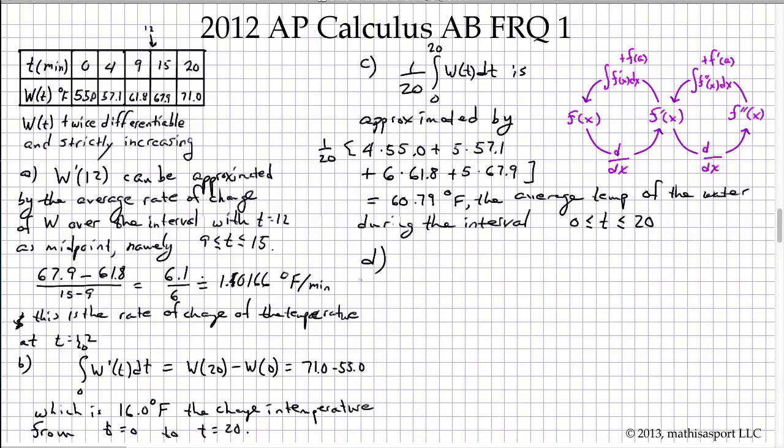Things change a little bit in part D. Remember, we were given specific values of the water temperature during the interval from 0 to 20 minutes. Now we're being given an explicit symbolic representation of the derivative of W over the interval from 20 to 25, and are asked to calculate the temperature at T equals 25. Again, we need to use the fundamental theorem of calculus. We'll write that W of 25 equals W at the last known value of 20 plus the integral from 20 to 25 of the derivative of W with respect to time.